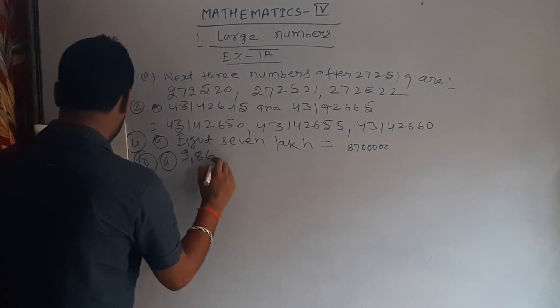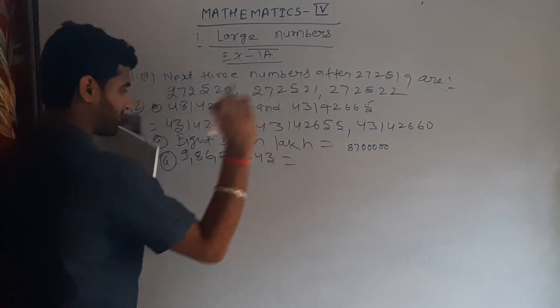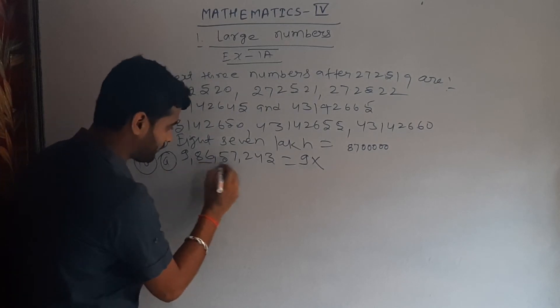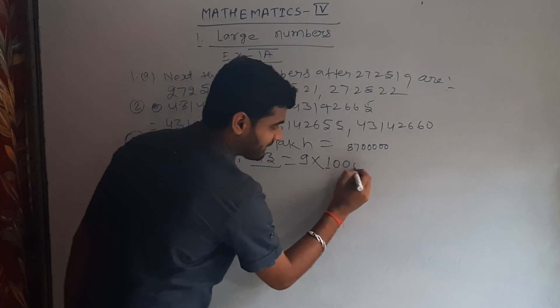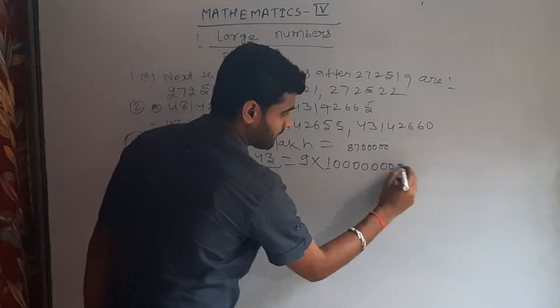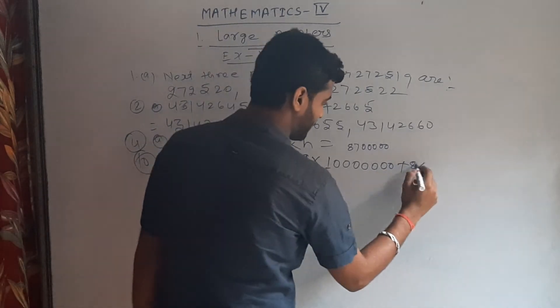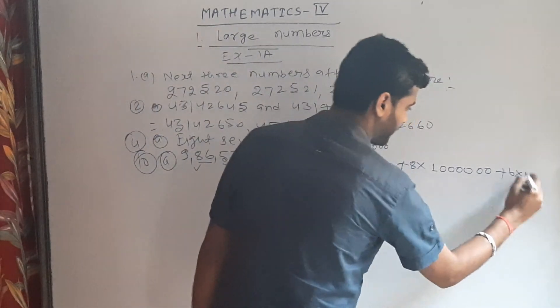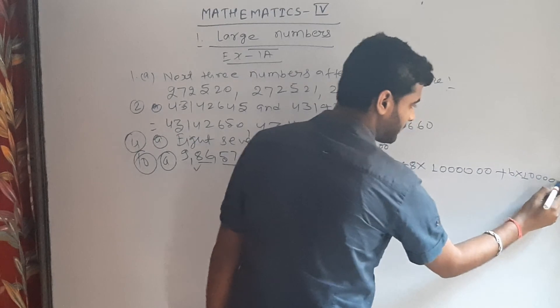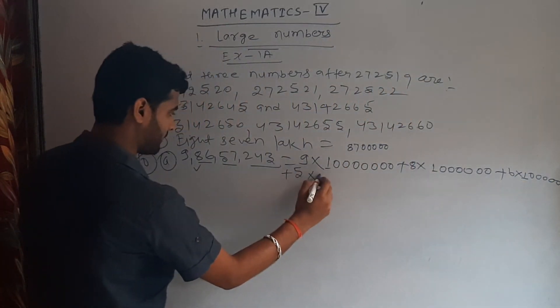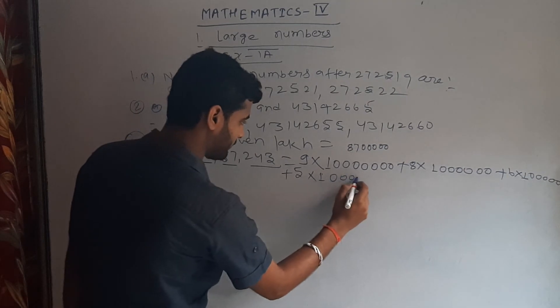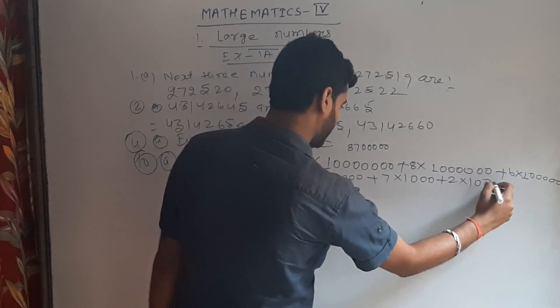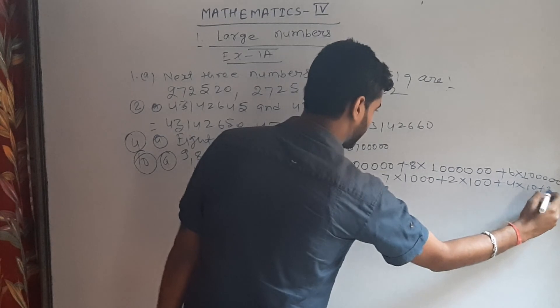Now question number ten. We have to write a number 9,86,57,243 in extended form. So first we will add 9 multiply—after 9 there are 2, 4, 3, 7, 5, so we add 1 and seven zeros—plus 8 multiply 1 and six zeros, plus 6 multiply 1 and five zeros, plus 5 multiply 1 and four zeros, plus 7 multiply 1 and three zeros, plus 2 multiply 1 and two zeros, plus 4 multiply 10, plus 3 multiply 1.